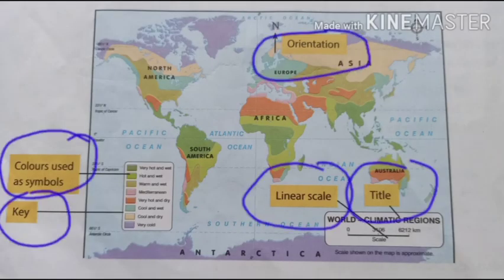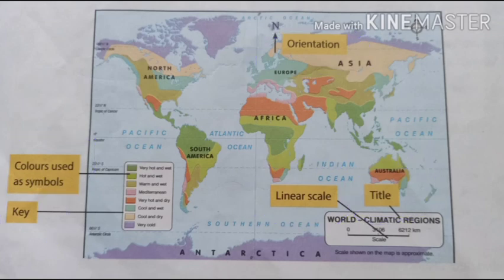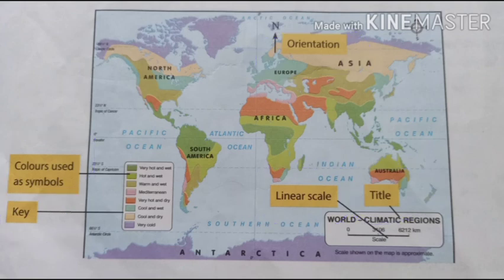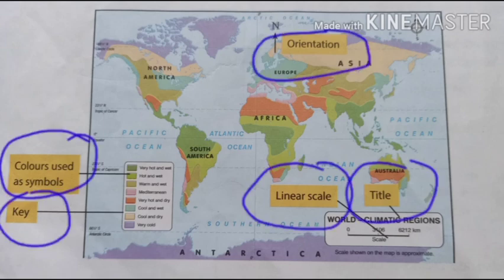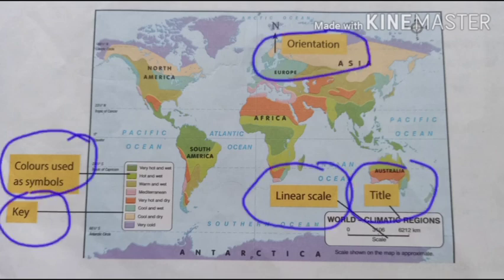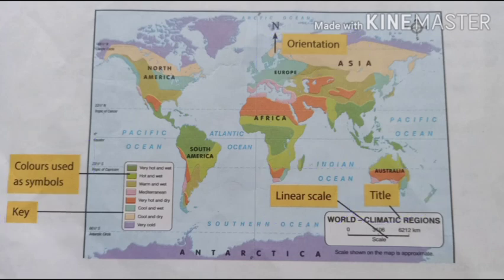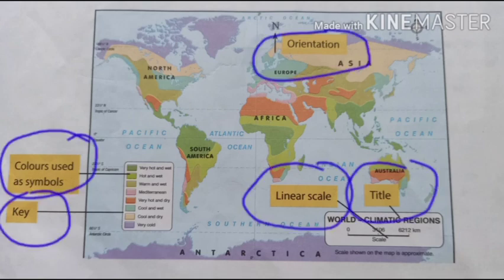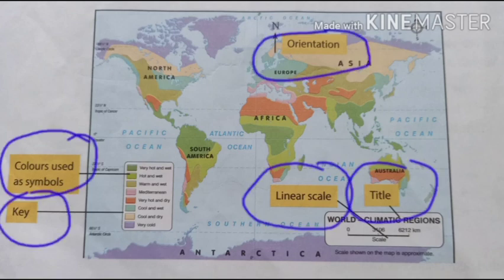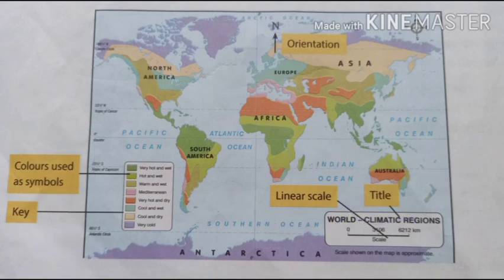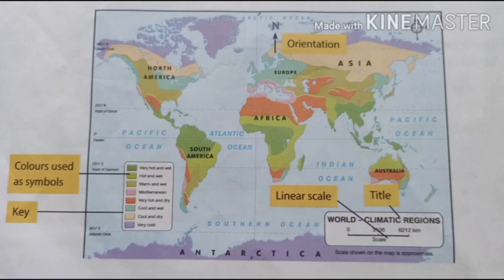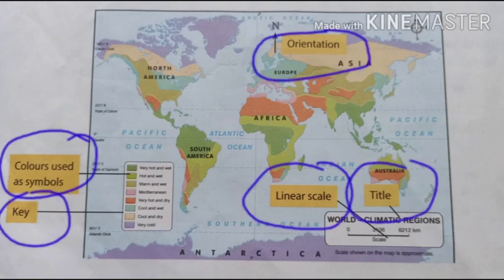This is a map showing all the elements of maps. We can see the title 'World Climate Region' at the bottom of the map. The orientation showing north is at the top. Colors are used as symbols, and the key or legend box shows what each color represents. The linear scale is also shown, indicating a distance of 6,212 kilometers. Hope you understood the important elements of maps from this picture.